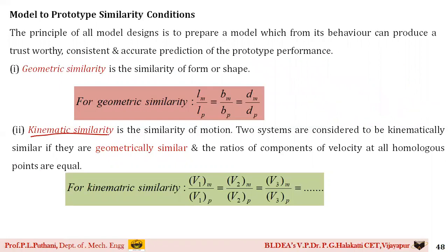For kinematic similarity, kinematics relates to motion or the velocity of a flowing fluid. In the model and prototype where fluid is flowing under geometrically similar conditions, you need to compare the ratios of velocities at all points — they are homologous, meaning equal in nature at all corresponding points. For example, velocity at point 1 for the model to the velocity at point 1 for the prototype, and similarly for point 2, and so on.